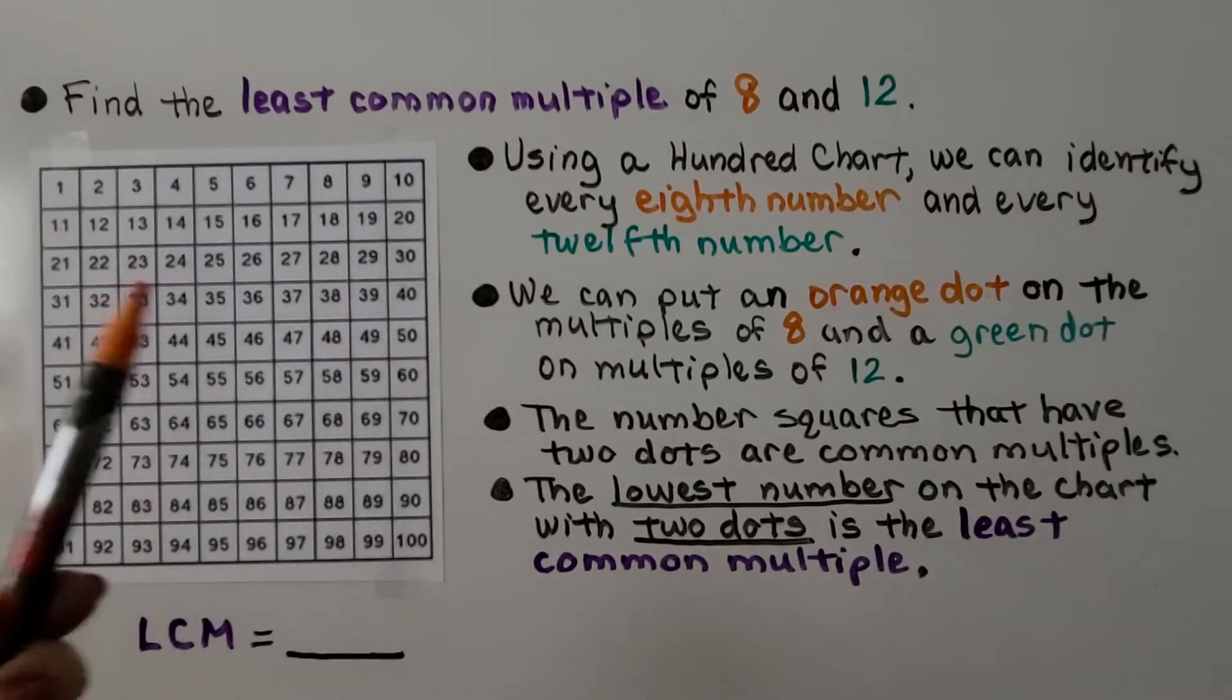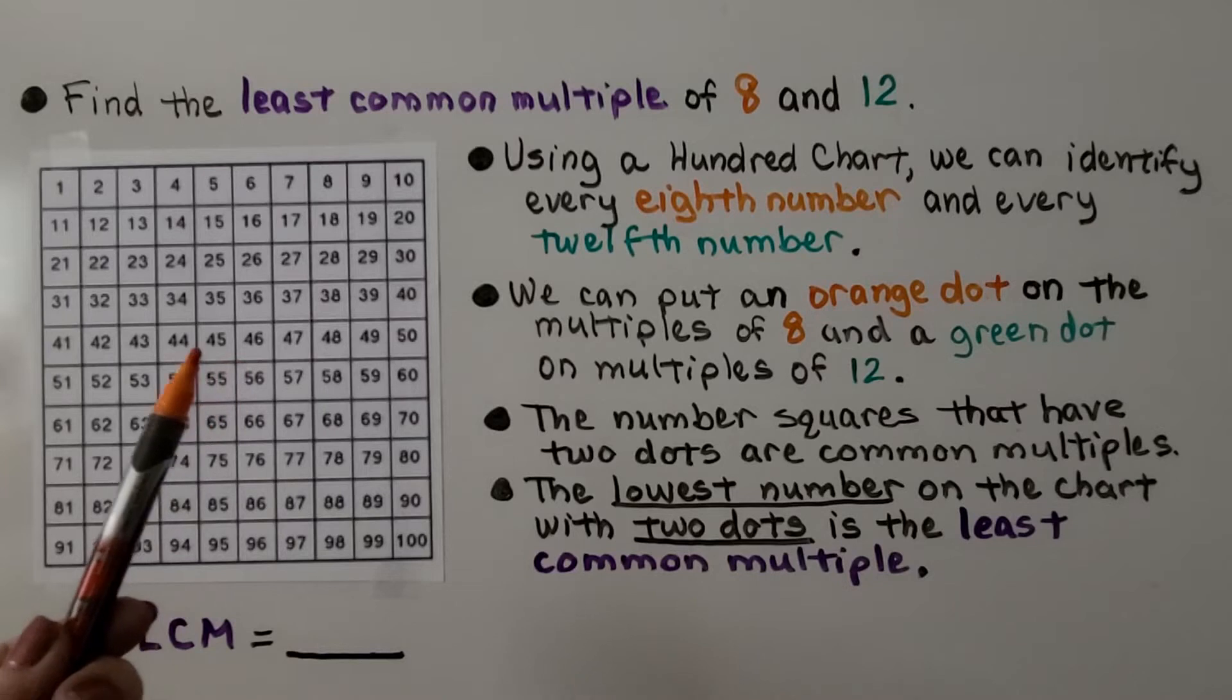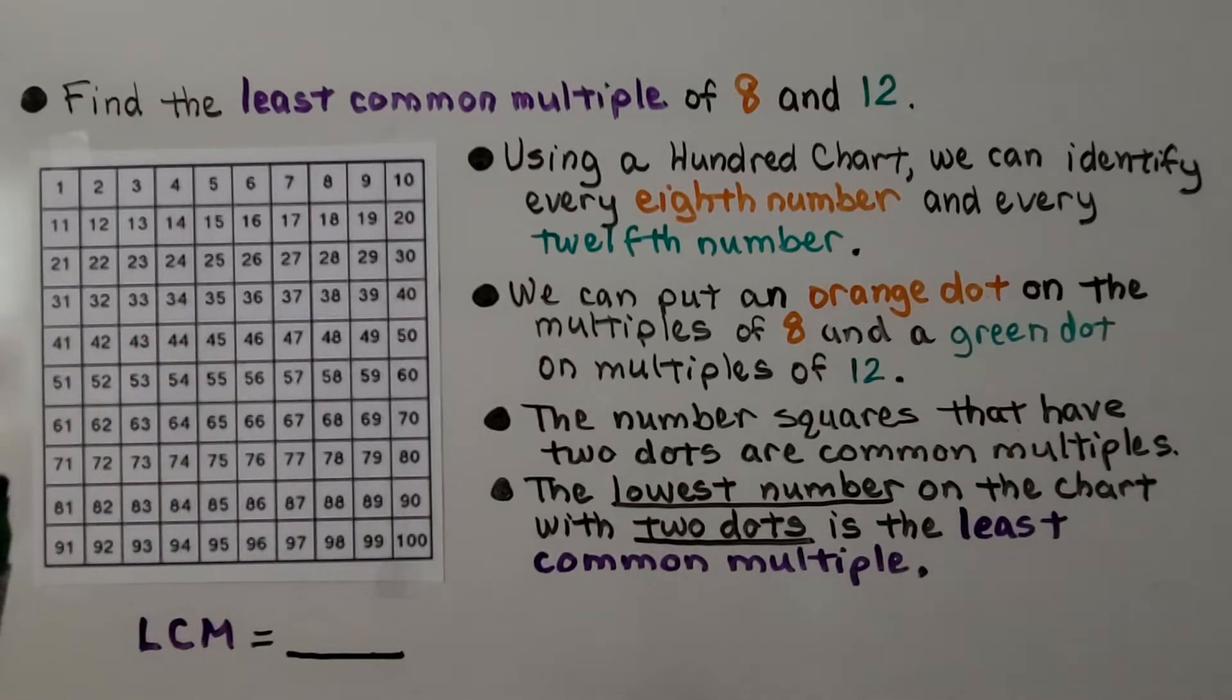We can put an orange dot on the multiples of 8 and we can put a green dot on the multiples of 12. The number of squares that have 2 dots are common multiples.